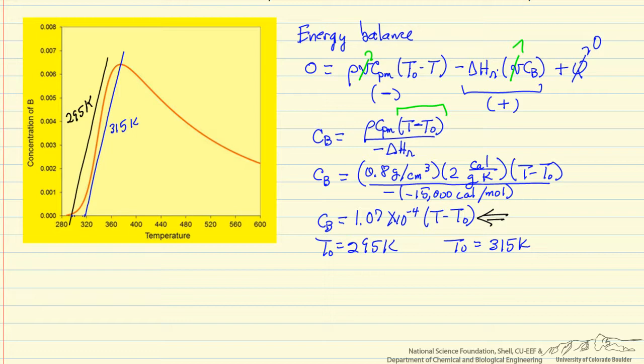And then the steady state solutions are the points where the mass balance and the energy balance intersect. So we can then estimate the concentration here for this feed temperature of 295, and then we can estimate the concentration here for this feed temperature.